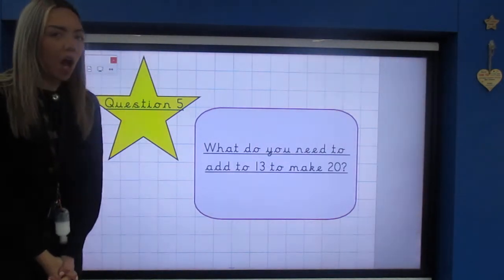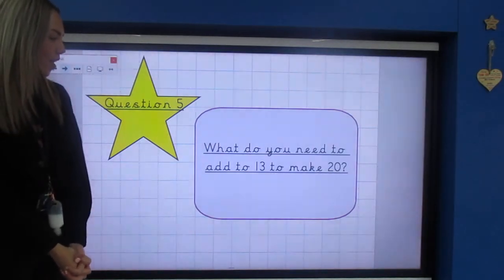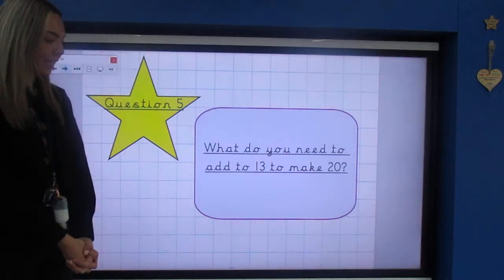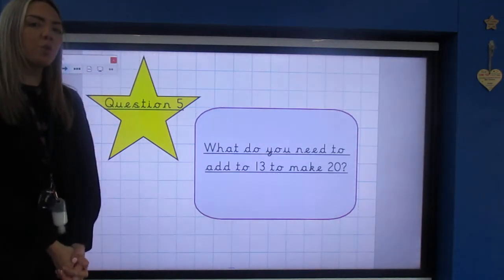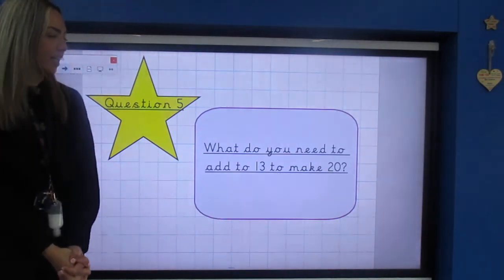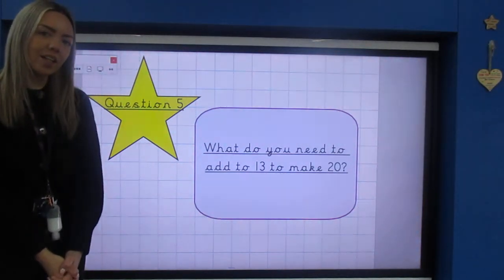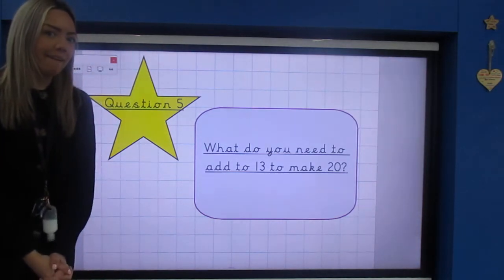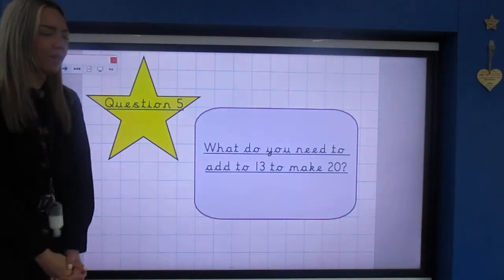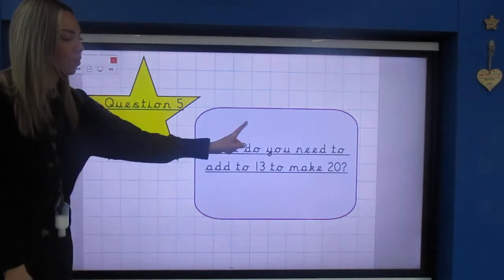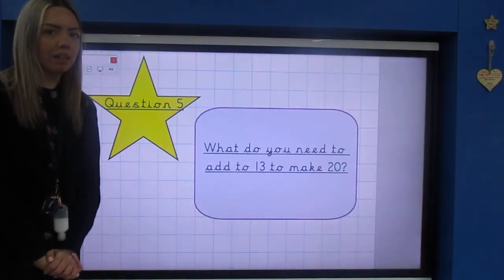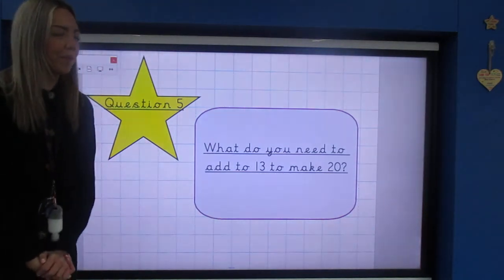Question number five, halfway through: what do you need to add to 13 to make 20? Very tricky. I'll give you a little clue for this one, you might want to write it as a sum with a missing number. That might give you a really good idea of how to solve that.